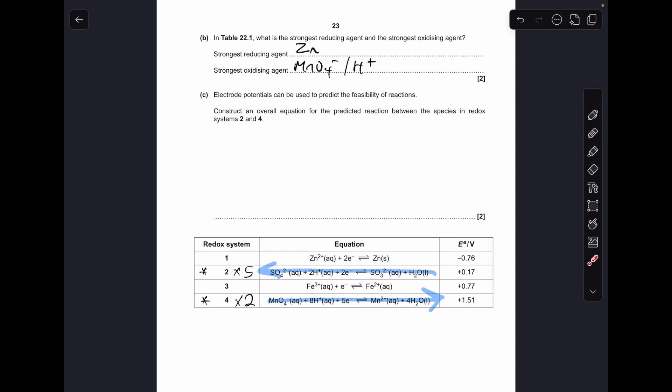And the other thing I need to point out is the number of electrons. So we've got to get them the same, so they'll cancel out when we add the two half equations together. So you can see we've got 2 in this one, we've got 5 in this one. So we're going to multiply system 2 by 5 and system 4 by 2.